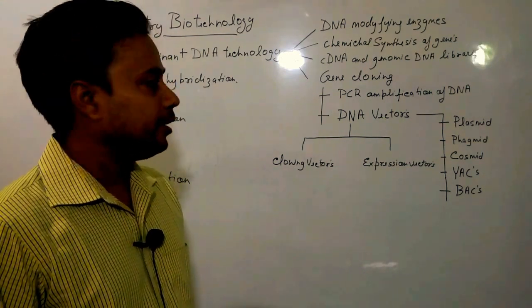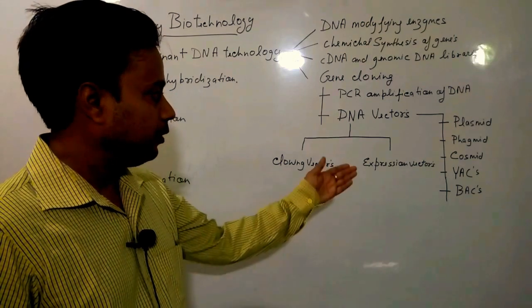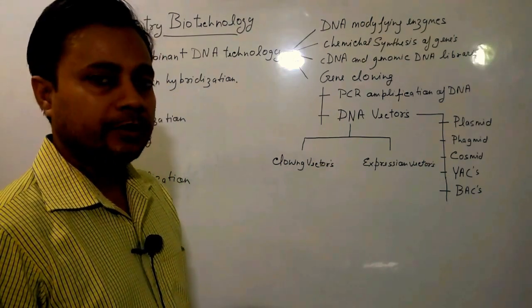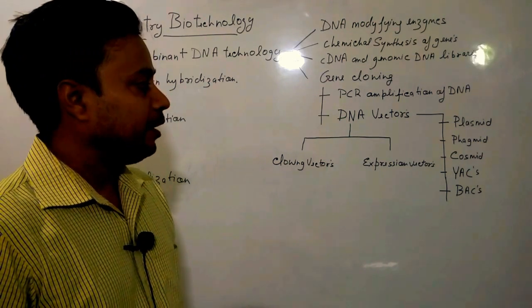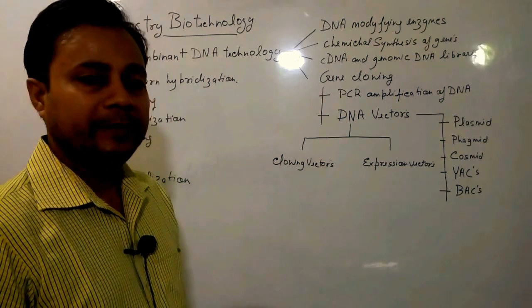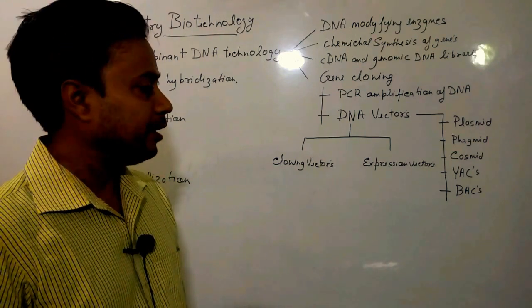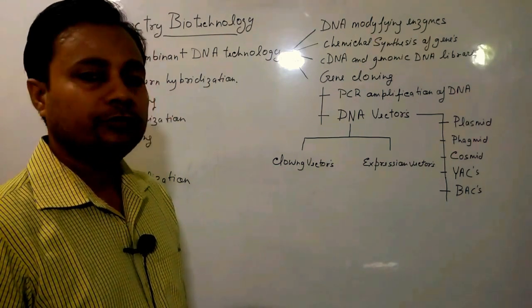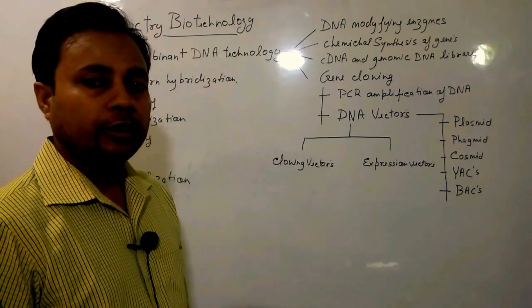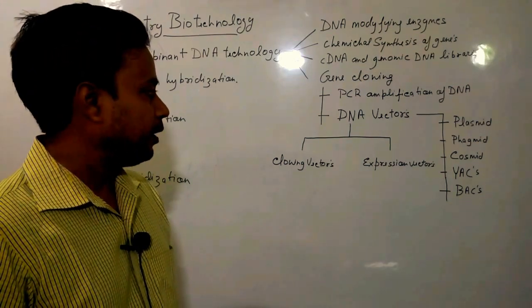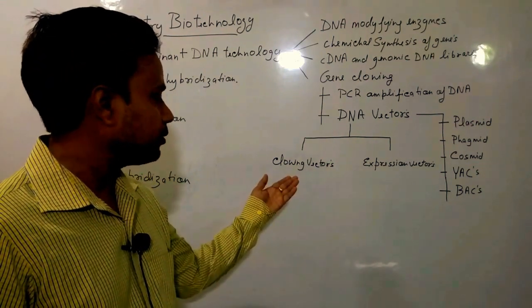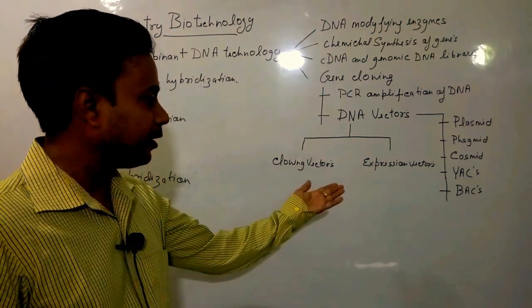On the basis of their origin, vectors can be subdivided into classes such as plasmids, hagemids, cosmids, YACs (yeast artificial chromosomes), and BACs (bacterial artificial chromosomes). Both YACs and BACs are used for the cloning of large DNA molecules. On the basis of their behavior, these vectors can be subdivided into cloning and expression vectors.